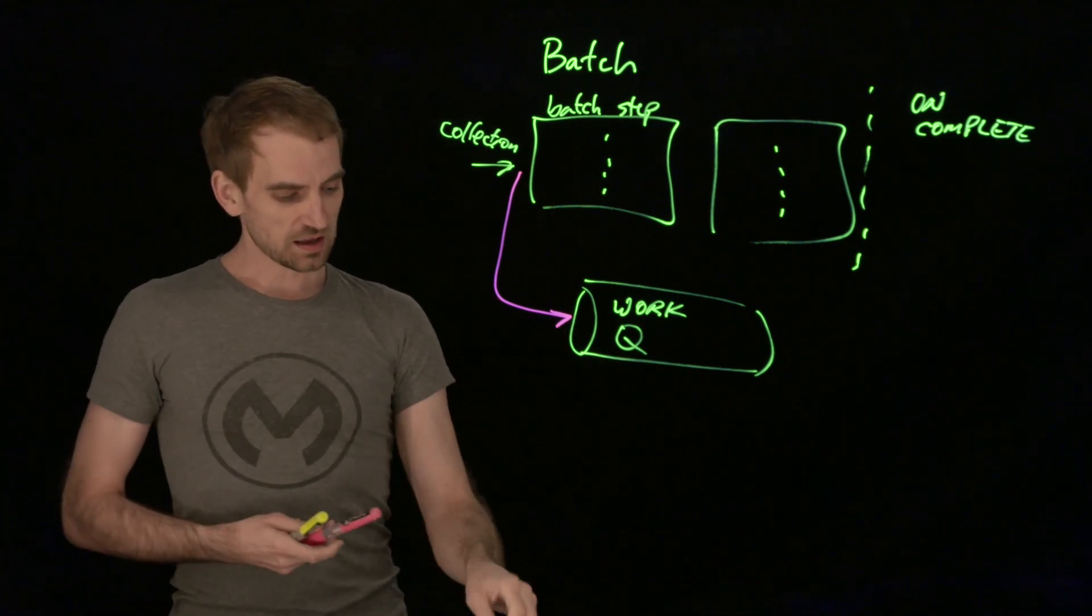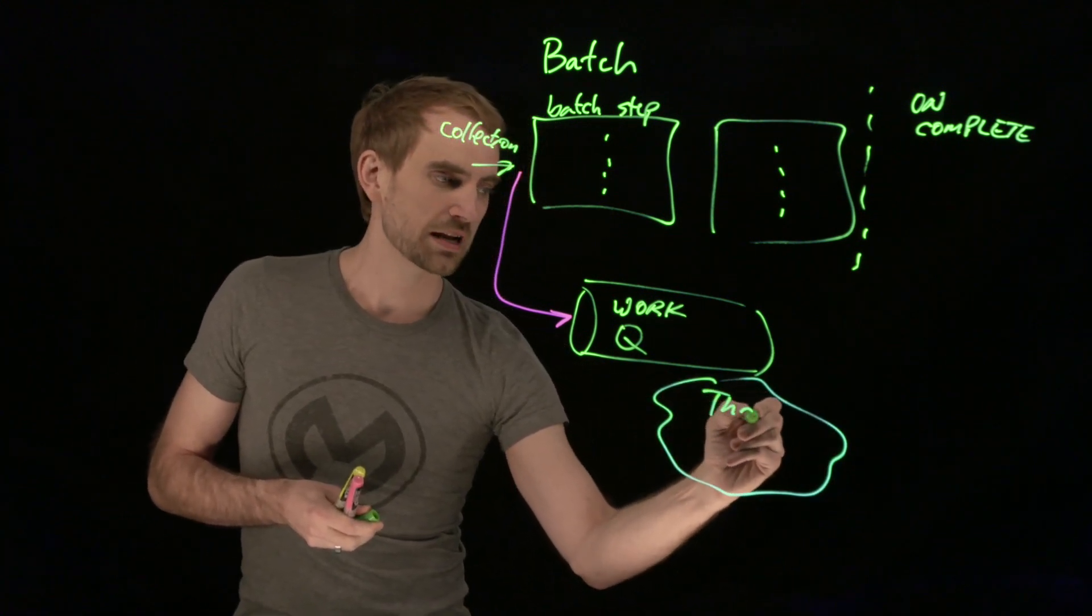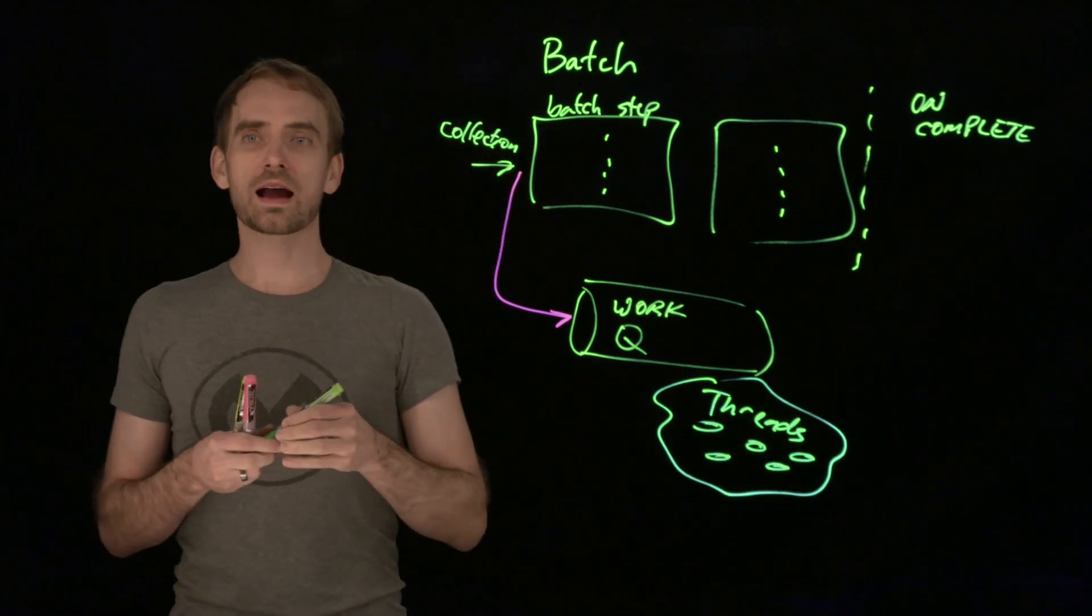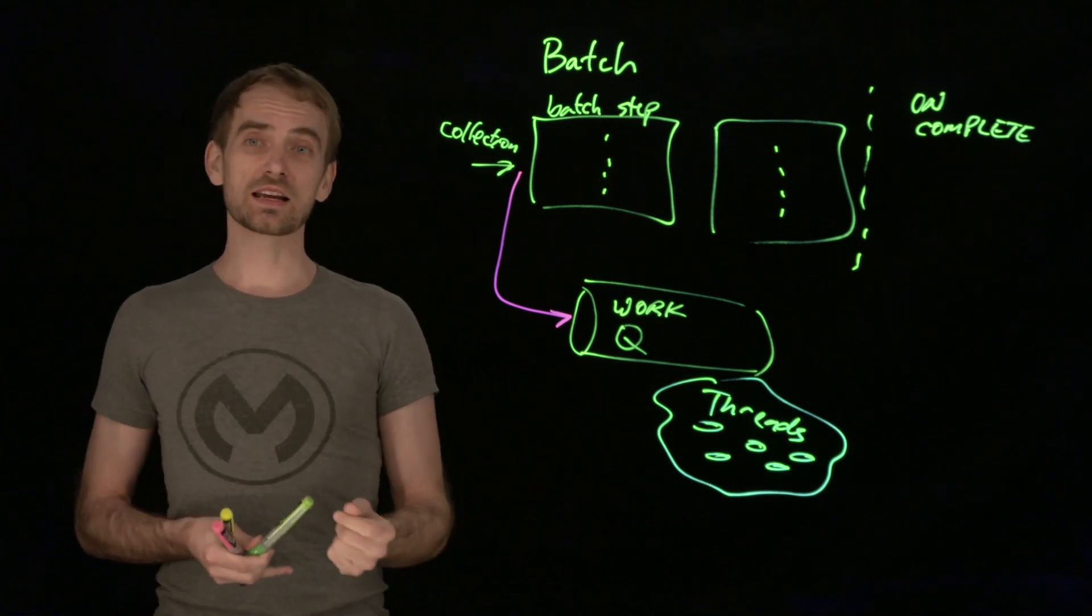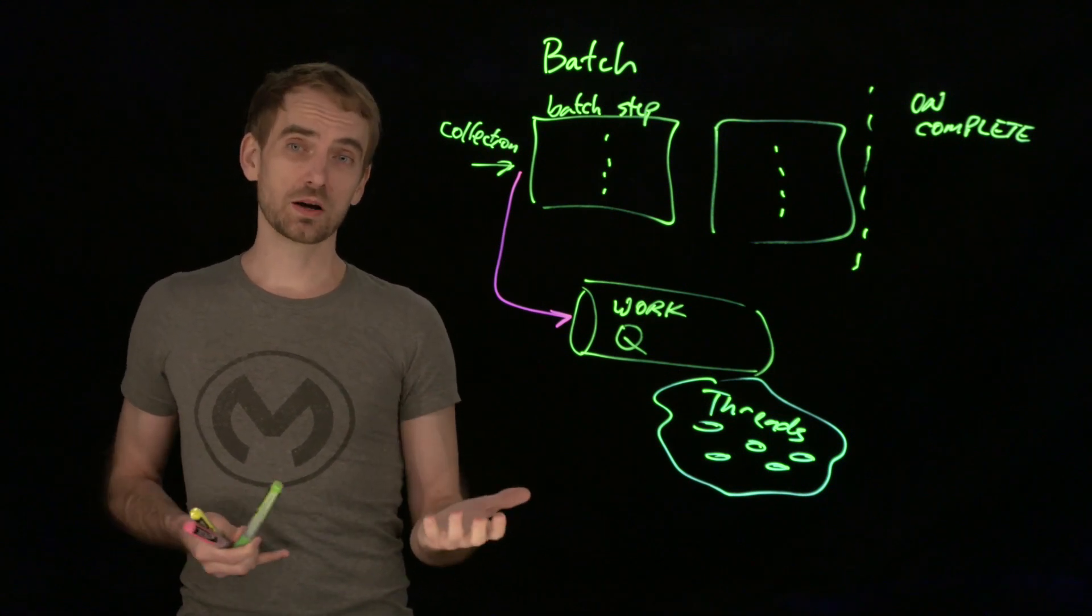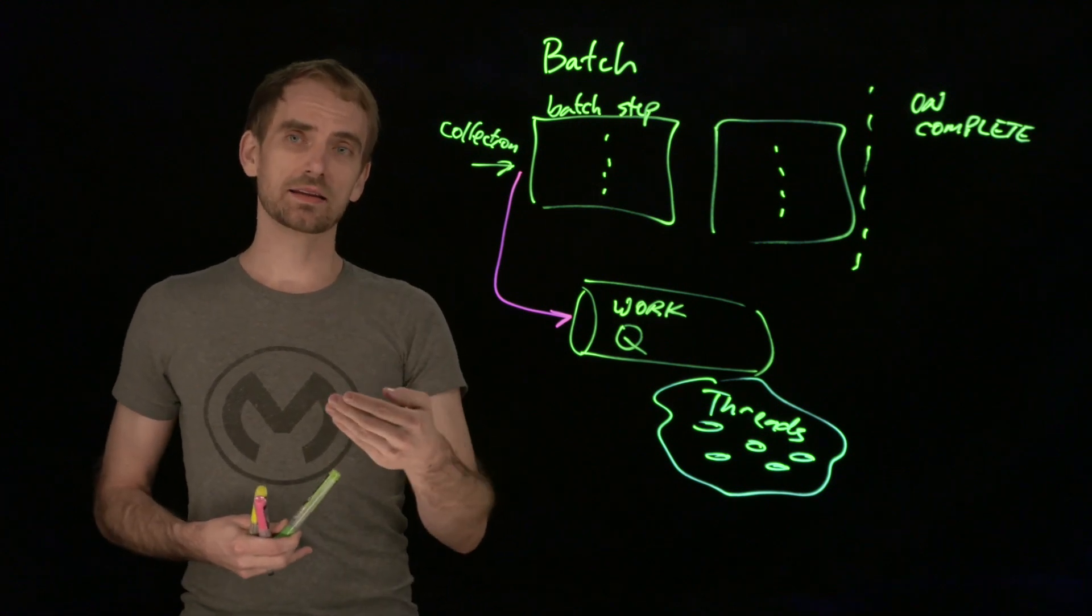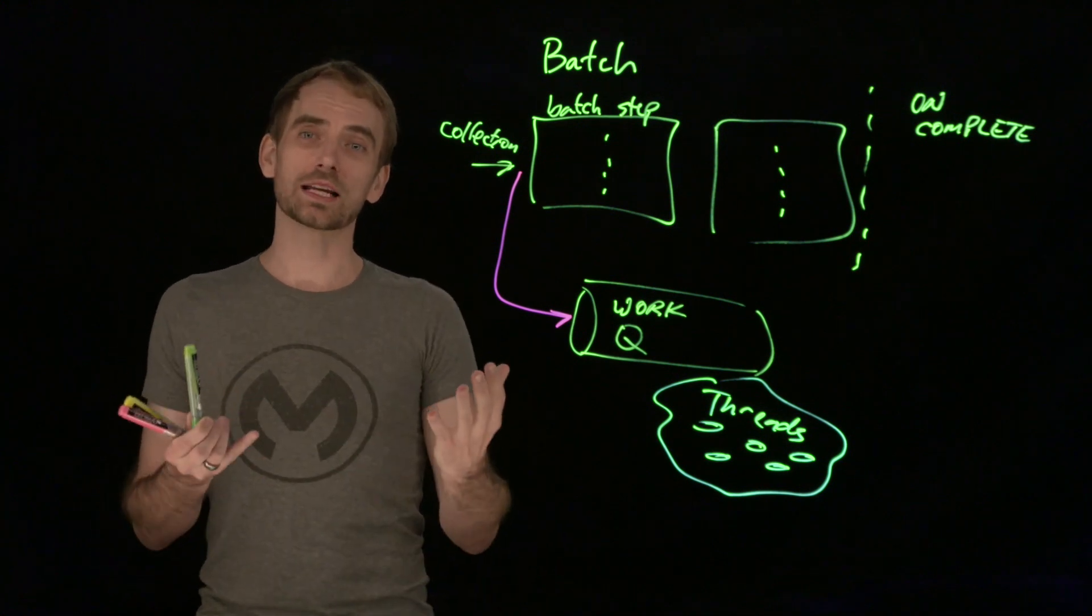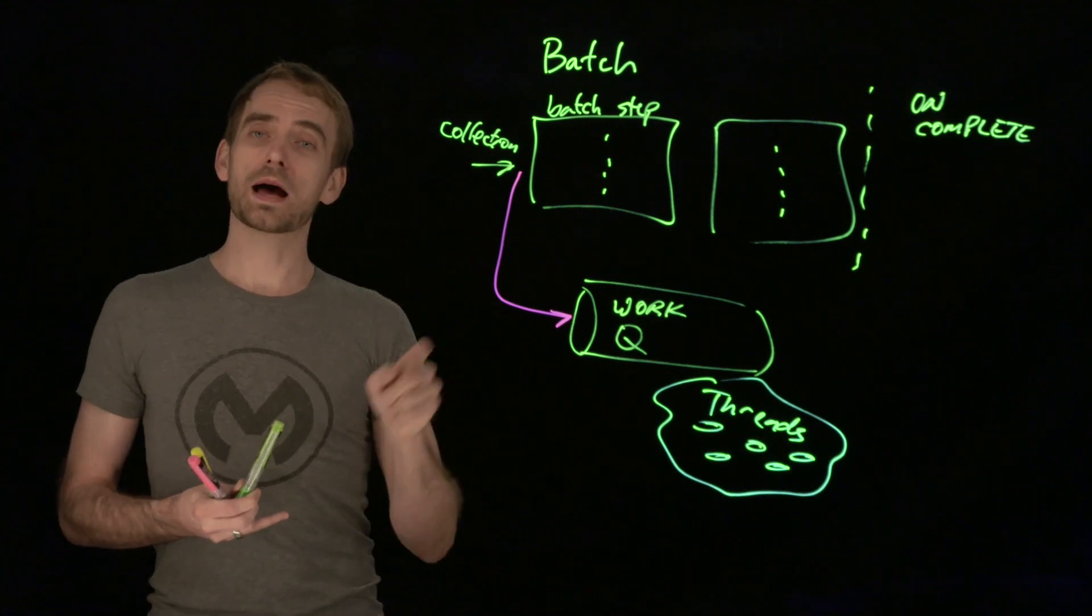So the other part that controls the way that batch works is that it has threads available. So it will have an ability to grab multiple threads to process your number of records more efficiently than doing them one by one. One by one would be something like a for each. With batch, we're trying to get this done quickly. So we need lots of threads processing lots of records through your batch steps.